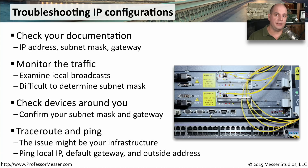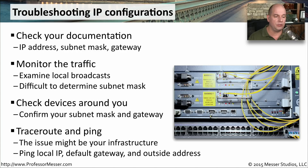We can use some utilities to get an idea of how widespread this problem is. We can use traceroute to see what hops exist between our device and a secondary device, and see how far we're able to communicate through the network. We might also want to ping around to devices. It's common to ping your local IP address to confirm your IP stack is working, then ping your default gateway, and then ping on the other side of the gateway — whether it's the gateway device itself or a device on the internet.